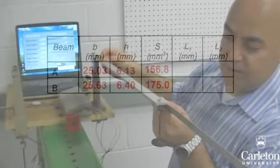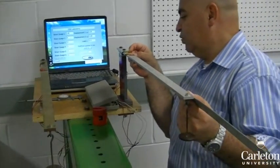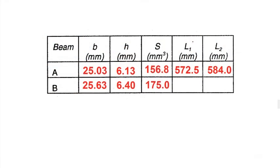The length of the beam needs to be measured only once, using a ruler. Record the distances from load application point to the longitudinal strain gauge and perpendicular strain gauge. These are L1 and L2 respectively.